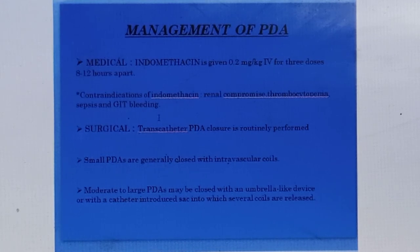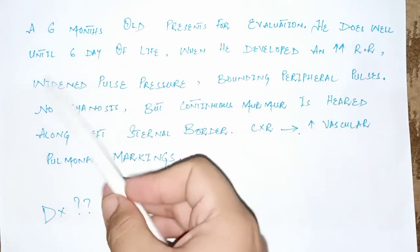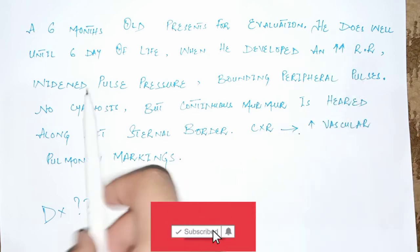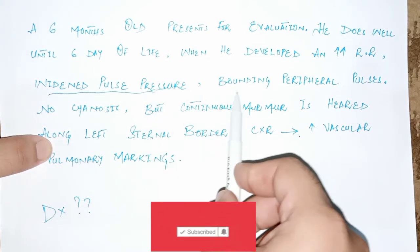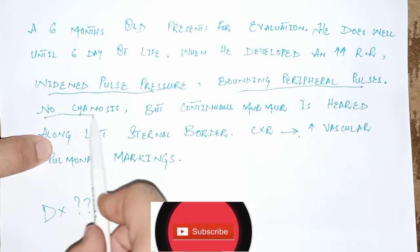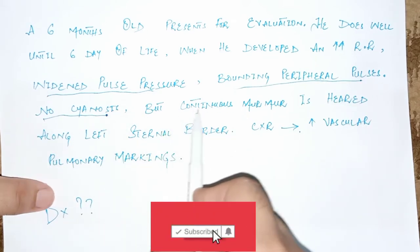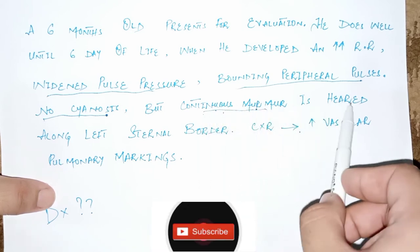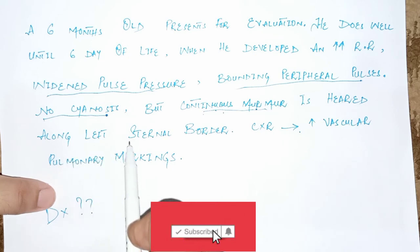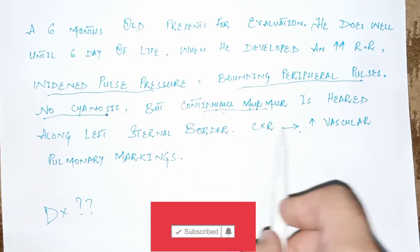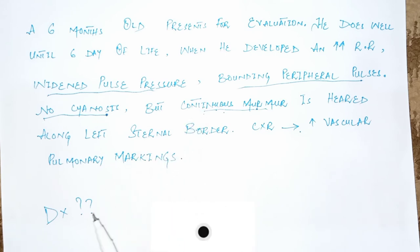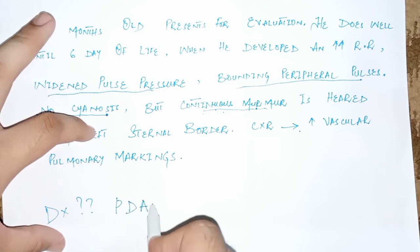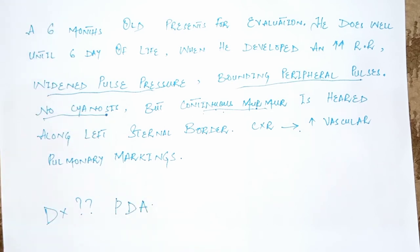For evaluation with a clinical scenario: a patient does well until the sixth day of life when he develops an increased respiratory rate, widened pulse pressure, and bounding weak peripheral pulses. There is no cyanosis, but there is a continuous pan-systolic or pan-diastolic machinery murmur heard alongside the left sternal border. Chest X-ray shows increased pulmonary vascular markings. The diagnosis in this case is patent ductus arteriosus.